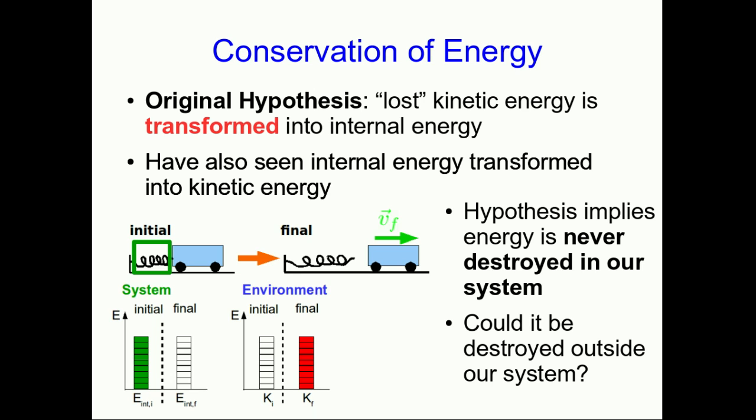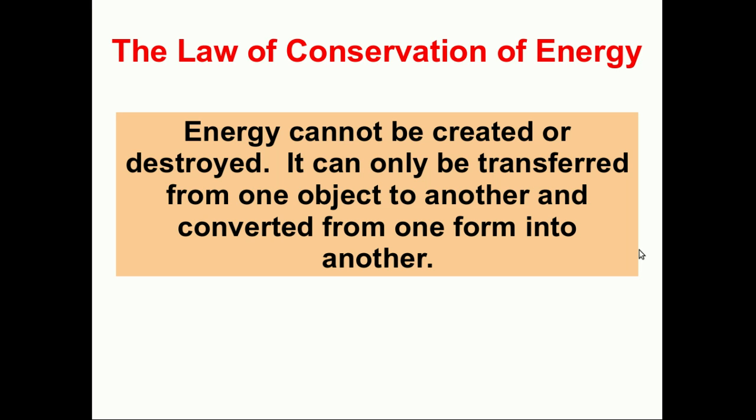And because we're implying that inside our system energy is never destroyed, well, we can define our system any way we want. And so, we are implying with our hypothesis that energy must be indestructible. So, I'll just state now that we have a law of conservation of energy. We believe that energy cannot be created or destroyed, but we can transfer it back and forth from one object to another, and we can convert it from one form into another.